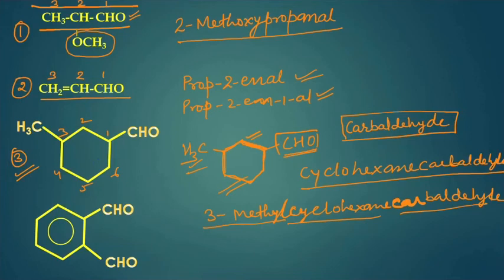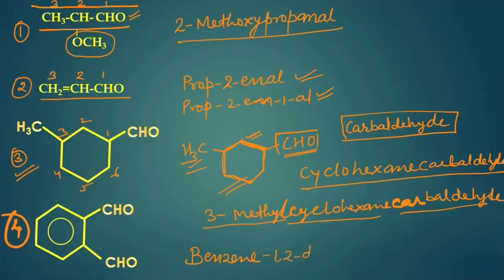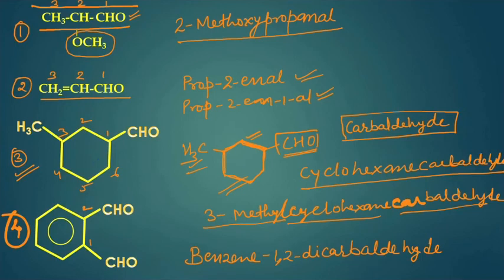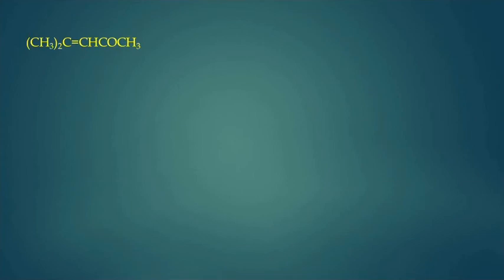Now try to write the IUPAC name of the fourth compound. This is benzene with two aldehyde groups attached at positions one and two. The IUPAC name of this compound is benzene-1,2-dicarbaldehyde.